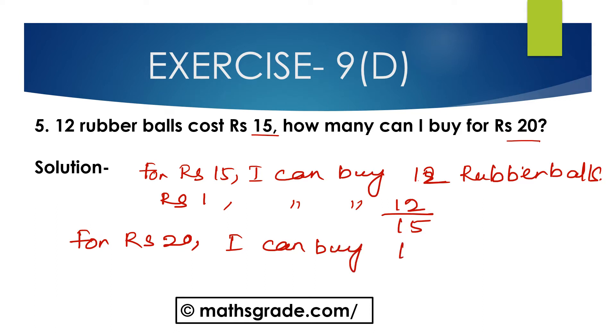So in 1 rupee I can buy 12 divided by 15 rubber balls. So for 20 rupees, I can buy 12 divided by 15 multiplied with 20. Now cancelling 15 and 12 with 3: 3 times 4 is 12 and 3 times 5 is 15. Now cancelling 5 and 20: 5 times 4 is 20. Now 4 multiplied with 4 is 16. So 16 rubber balls I can buy for 20 rupees.